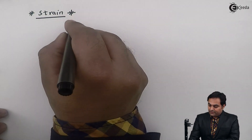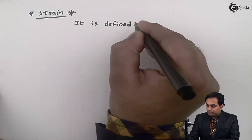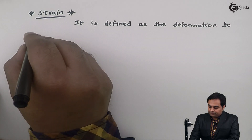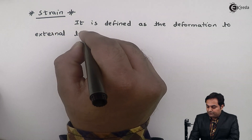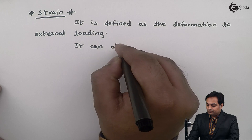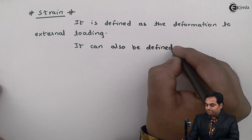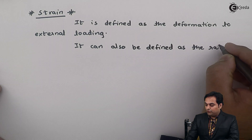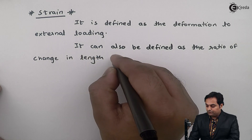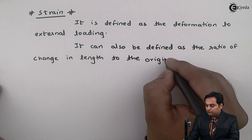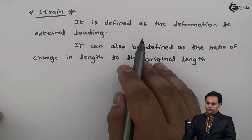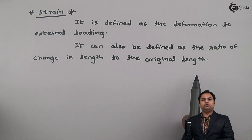Strain is defined as the deformation due to external loading. It can also be defined as the ratio of change in length to the original length. So here I have written the definition of strain: it is the deformation due to external loading, or the ratio of change in length to original length.